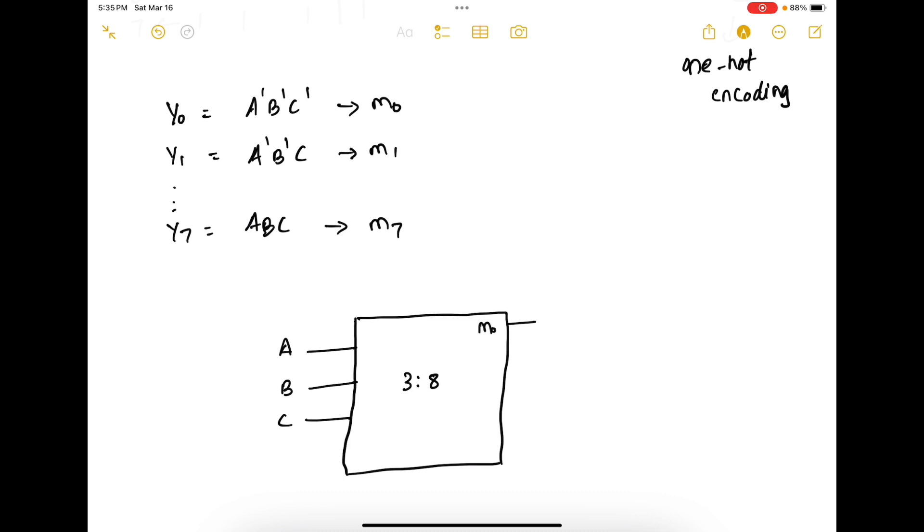This is M0, M1, M2, and so on, M7. So this is Y0, Y1, Y2, and so on, Y7.